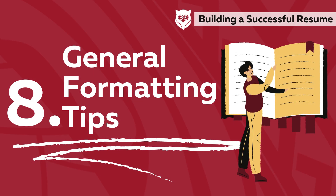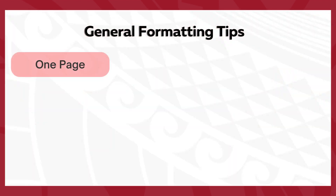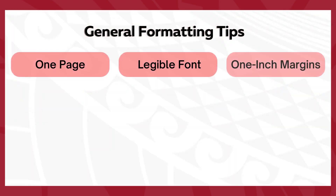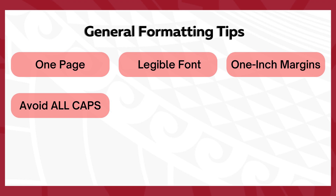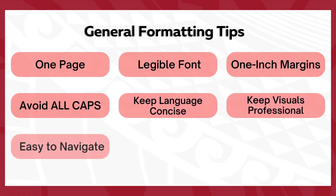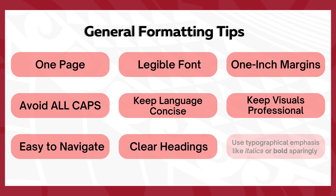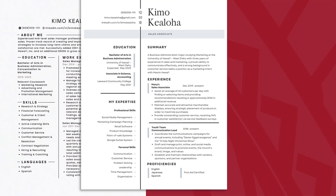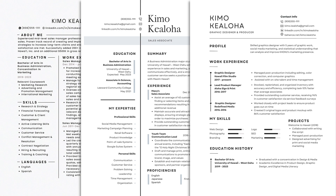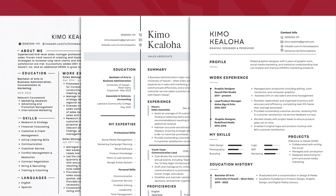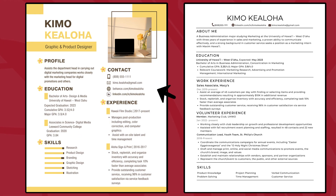Number eight, general formatting tips. Try to keep your resume to one page. Have a legible font, one inch margins, and avoid all caps in the content portion. Keep the language concise, visuals professional, and make sure it's easy to navigate. Have clear headings for each of the areas and use typographical emphasis like italics or bold sparingly. There is no one format for the visual aesthetic of a resume, and you should customize it to the job you're applying for. For example, a graphic designer's resume may be colorful and unique, but a business person's resume should keep their information fairly plain.